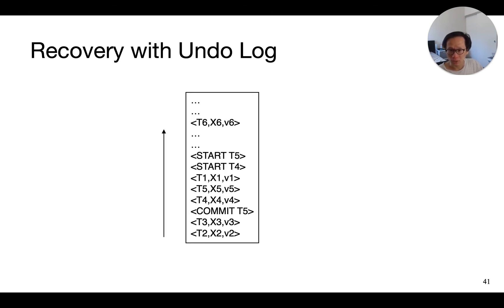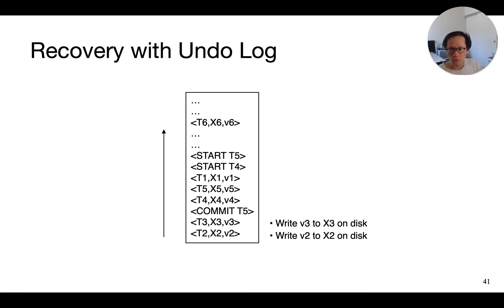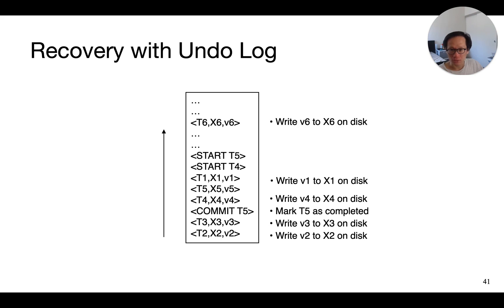As a concrete example, consider the undo log where we crashed at the very end as shown on the slide. During recovery, we first see the update record from transaction T2. Since that transaction is incomplete, we write back V2 to data element X2 on the disk. The same happens to the next update record for V3. Then we see the commit record for T5, so we mark it as completed and skip any update records from T5 if we encounter them later. This process continues until we have finished processing the entire log.